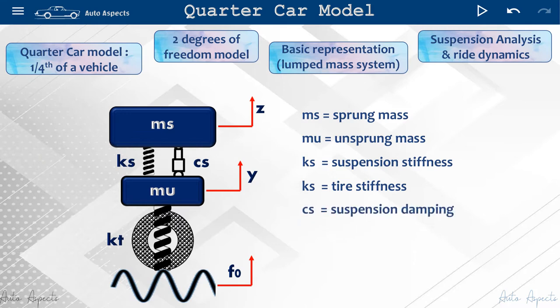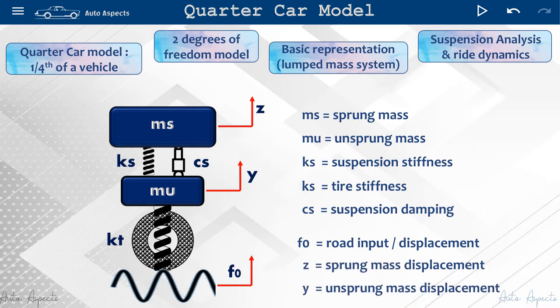This quarter car model is subjected to an input excitation from road, which is F0. While Z and Y is the initial displacement induced at sprung and unsprung masses. With this basic understanding, let us derive the equations of motion for the quarter car model.